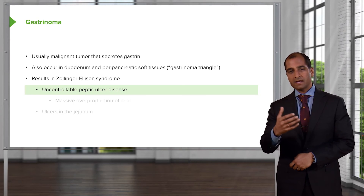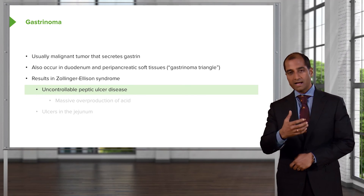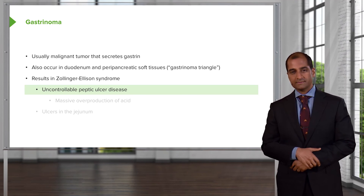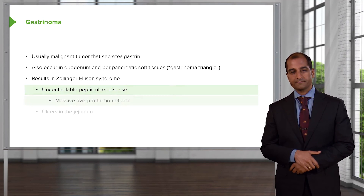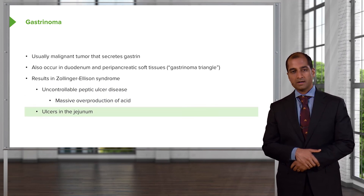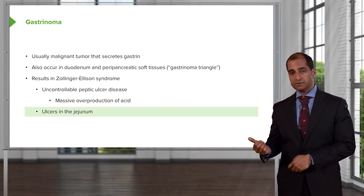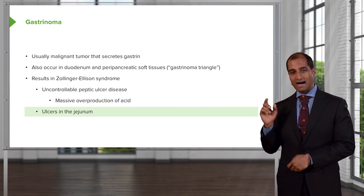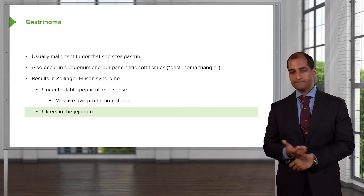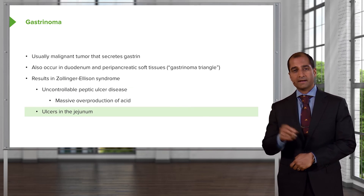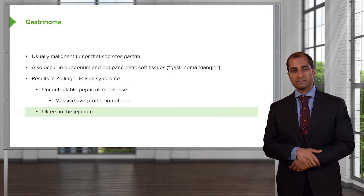So you are going to have malabsorption, and you are going to have massive diarrhea. Massive overproduction of acid, ulcers in the duodenum — high on the differential: a gastrinoma, a second type of pancreatic islet cell tumor.